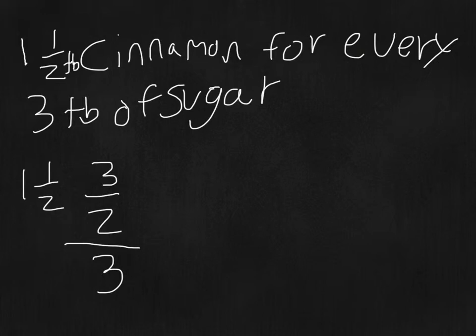So you have three divided by two times, because you change the sign, one third because you flip it. And that leaves you with three sixths. So that is the proportion of cinnamon to sugar.